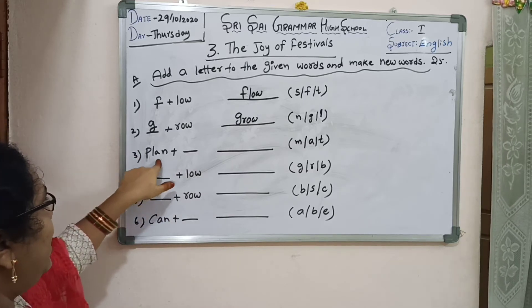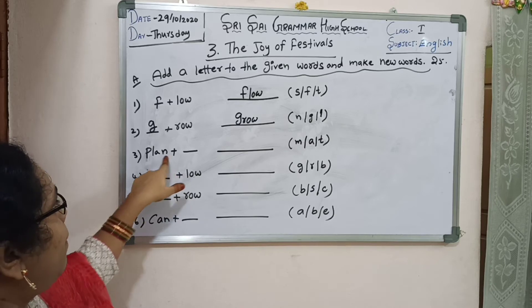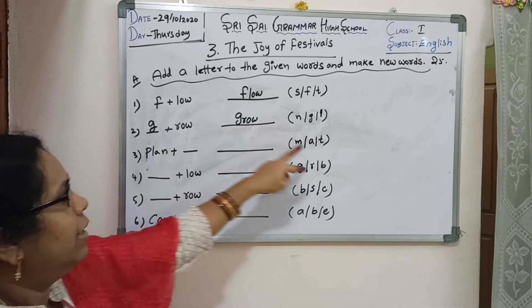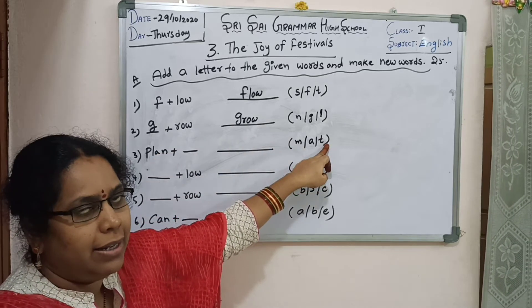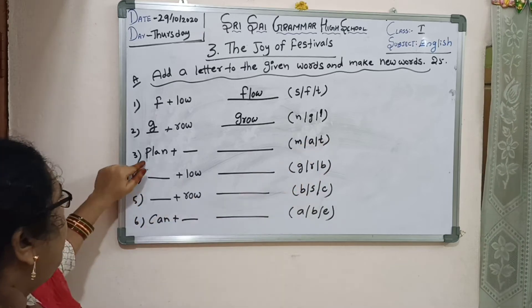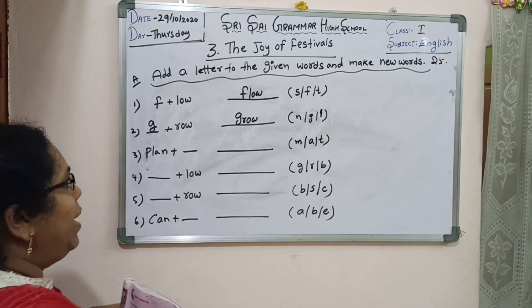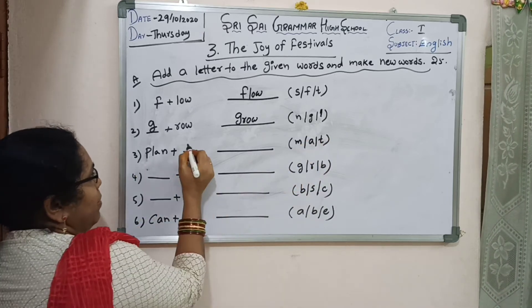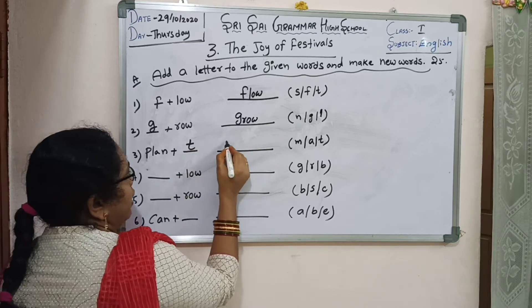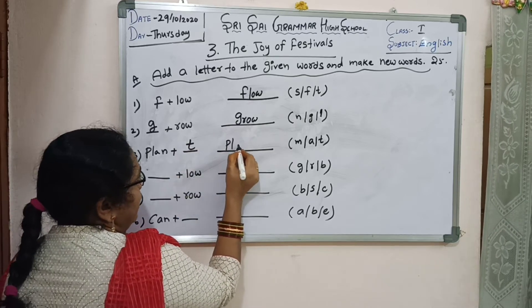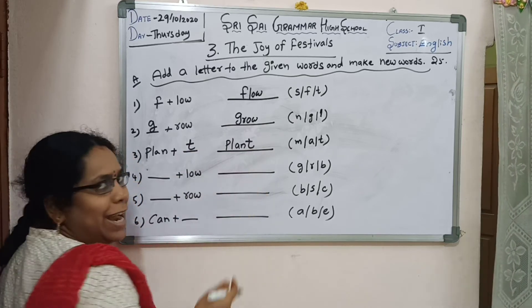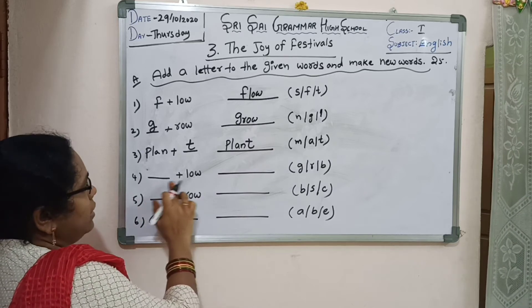Third one: P-L-A-N. We add the letter T at the end of the word — P-L-A-N-T. Plant. We write the T and it becomes a new word: P-L-A-N-T, plant.